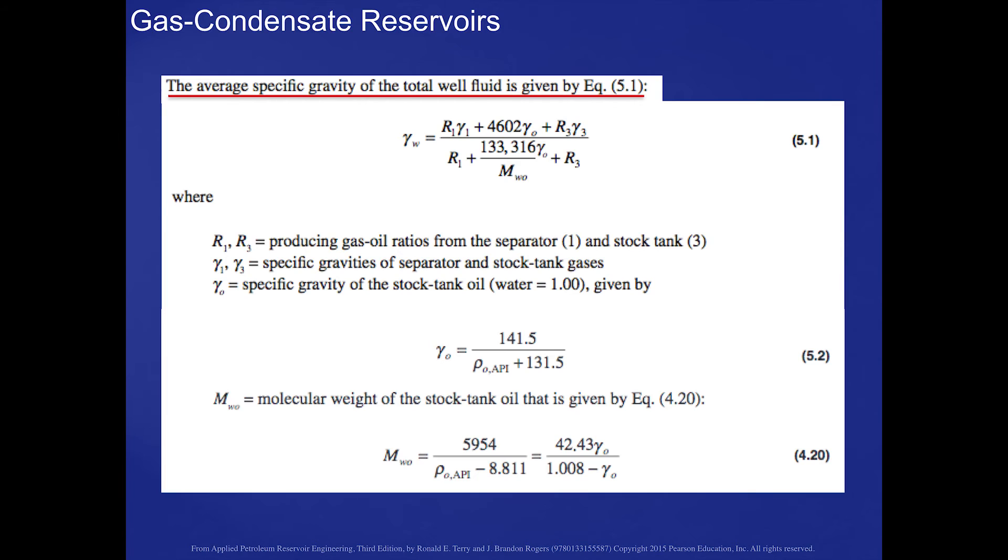The average specific gravity of the total well fluid is given in equation 5.1 in this slide, where the values R sub 1 and R sub 3 represent the producing gas oil ratios from the separator and the stock tank.